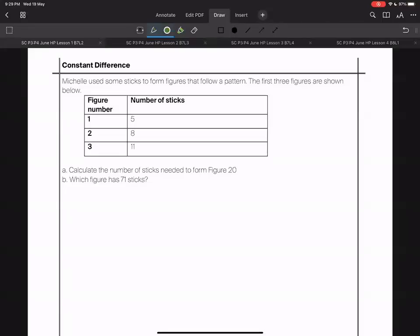The first three figures are shown below: figure one has five sticks, figure two has eight, figure three has eleven. It is a constant difference of three. There's a framework that we want to teach our students here for constant difference. Use this framework: for every one more figure, in this case we have three more sticks.